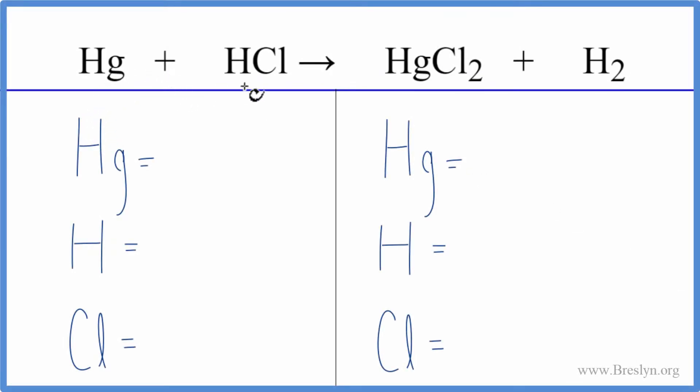To balance this equation, mercury plus hydrochloric acid, let's count the atoms up on both sides of the equation.